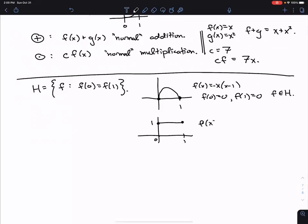In other words, just take F(x) to be the constant function equal to one. That should also be allowed in here because F(0) equals one and so does F(1). They're both equal. So this F is also in H.